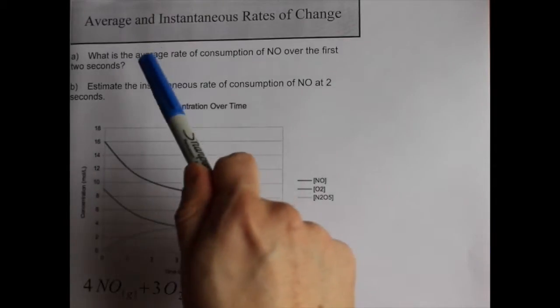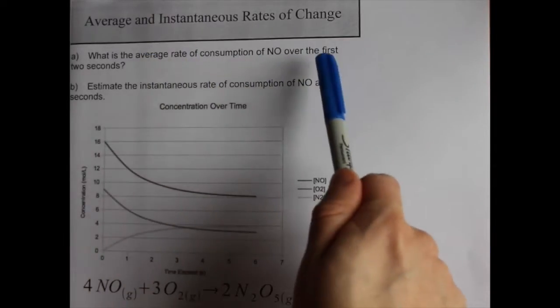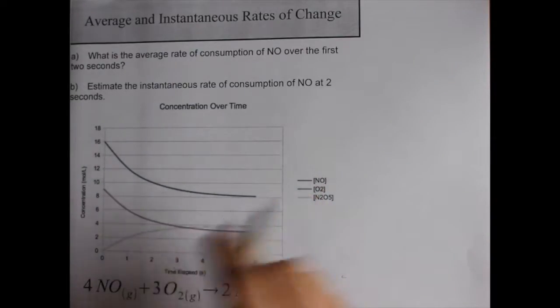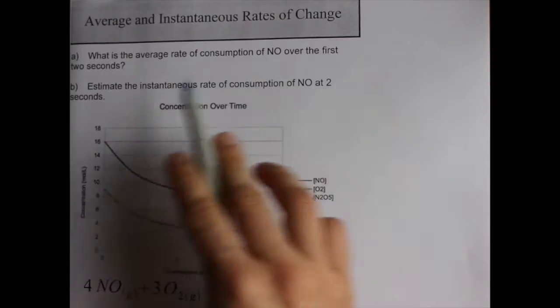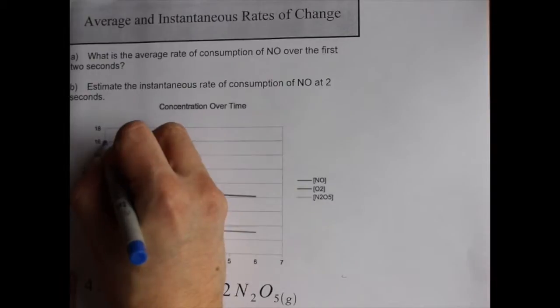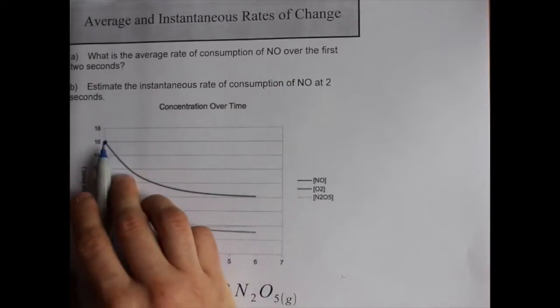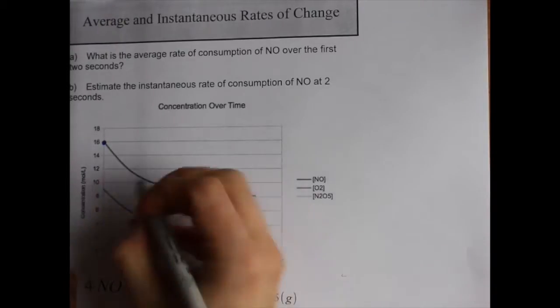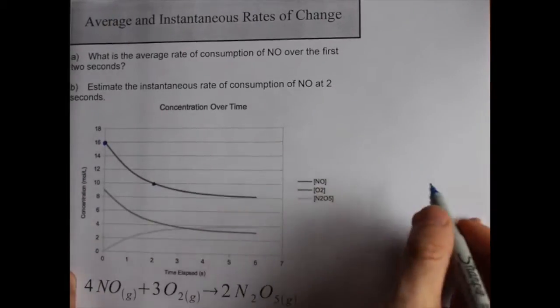But the average rate of consumption of NO over the first two seconds involves finding the slope between those two points. And when I say those two points, I mean time equals zero and time equals two. You'll notice at time zero, the NO concentration is 16 moles per liter. And at two seconds, the concentration is about 10 moles per liter.